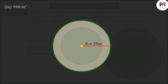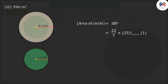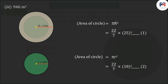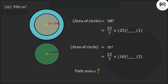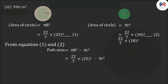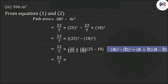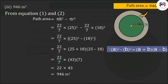First, we find the area of the whole circle, which is represented by equation 1. Similarly, find the area of the park circle, which is represented by equation 2. Since we have to find the area of the path, we subtract equation 2 from equation 1, which when solved gives the area of the path as 946 square meters.